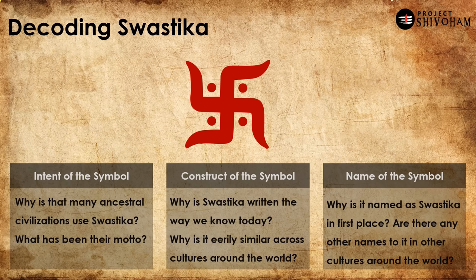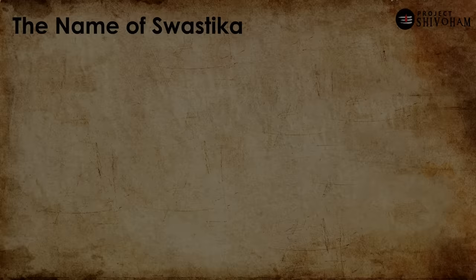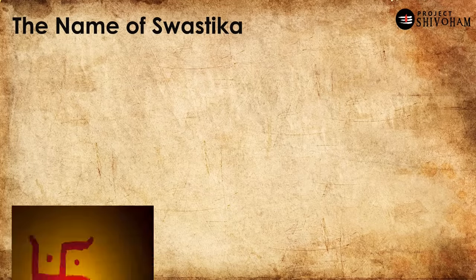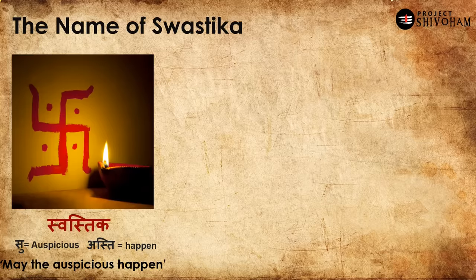Same way — what is the intention of swastika? Why is it constructed that way? And why is it called swastika in the first place? All three should perfectly match — not just for swastika, but for any alphabet or symbol across the world. Now let's try to understand the intent of swastika, the construct of swastika, and the name of swastika. Let us start with the easiest one — the name. Swastika is a sandhi of two words in Sanskrit: 'su' and 'asthi.' Su means auspicious and asthi means happen or made to happen. So the word swastika means 'may the auspicious happen' — it's a kind of a blessing.